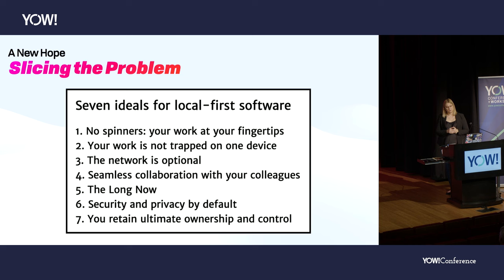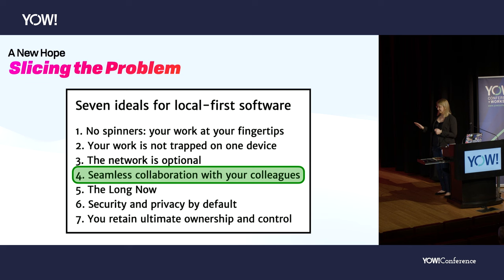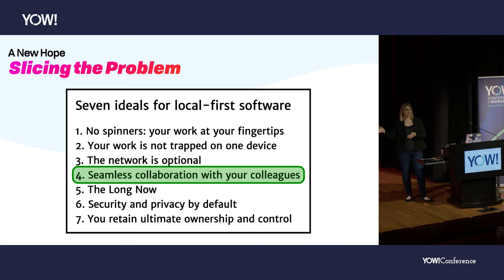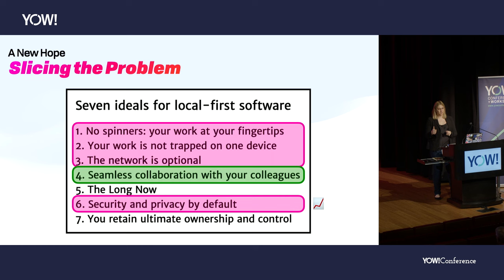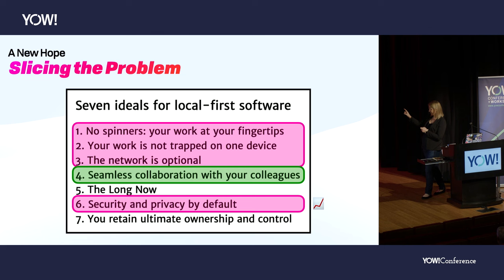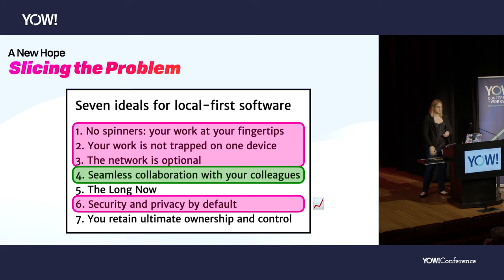The original article about local first proposed seven ideals. The fourth one — seamless collaboration with colleagues — has been an absolute slam dunk; it's what most people think of with local first. A lot of work has gone into making it so you have a local copy but can still interact. The rest: no spinners, work at your fingertips, very fast, latency-sensitive; your work is not trapped on a single device; the network is completely optional; and security and privacy by default. You can never have something purely completely secure, but local first gets you much further immediately because things like encryption at rest are handled for you.